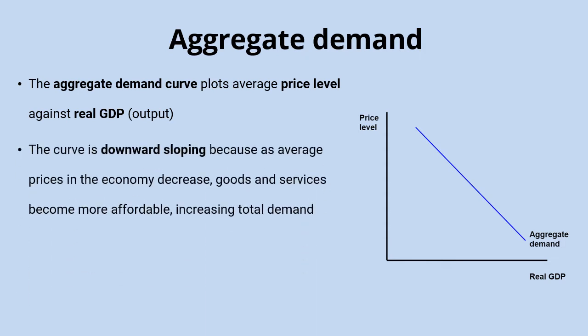The aggregate demand curve, like the demand curve, is downward sloping. So there'll still be an inverse relationship between average prices in an economy and total demand. As average prices fall, goods and services become more affordable and total demand in the economy will be higher. There's also an effect where more people from abroad are buying our exports, and more UK consumers will substitute cheaper UK products over the relatively more expensive imports as the price level falls. All of that adds up to a downward sloping aggregate demand curve.